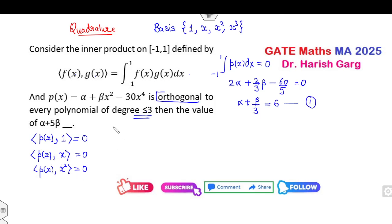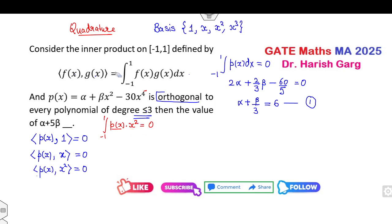For f(x) = x: the integral from −1 to 1 of p(x)·x dx = 0, which is automatically zero because p(x) is an even function and x is an odd function — their product integrates to zero over a symmetric interval. For f(x) = x²: multiplying gives terms like αx², x⁴, etc. Integrating from −1 to 1 gives (2/3)α + (2/5)β + 60/7 = 0.